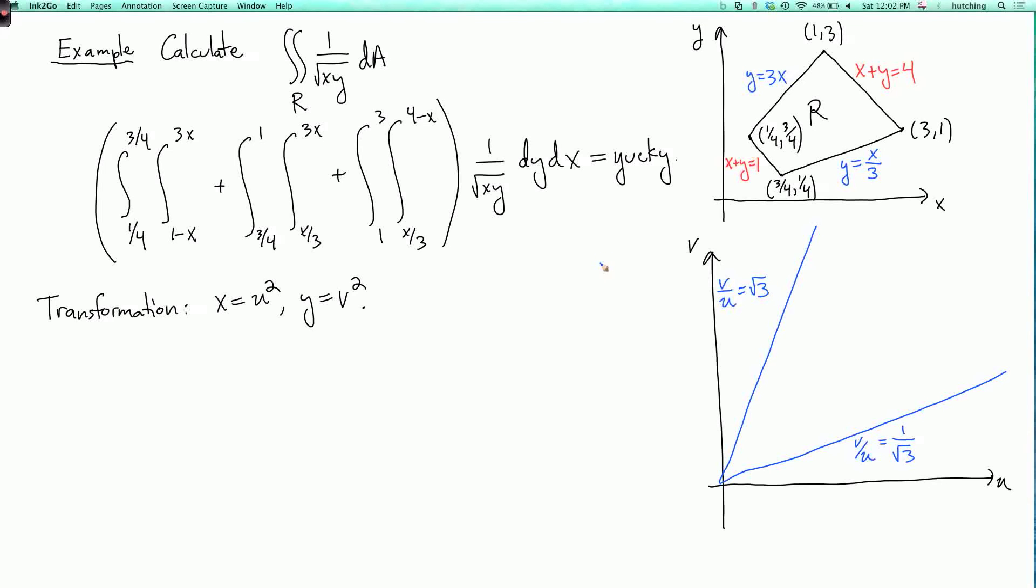And the line x plus y equals 1 becomes the circle u squared plus v squared equals 1. And the line x plus y equals 4 becomes the circle of radius 2 where u squared plus v squared equals 4.